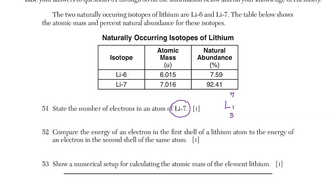What does it mean to have multiple forms of the same atom? In the diagram, we have lithium-6 and lithium-7 — both are lithium, which means they both have atomic number 3. They have different mass numbers. That top number is the mass number, which is protons plus neutrons.